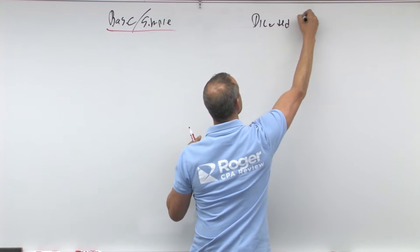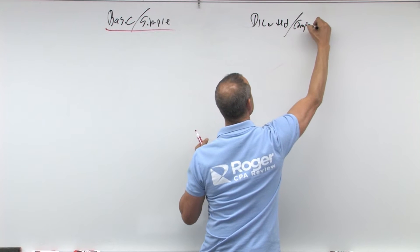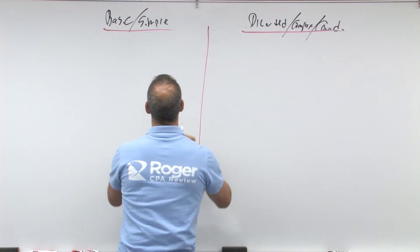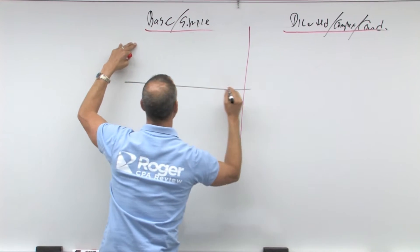Then we're going to go on to our diluted earnings per share, which is your complex system, which is anyone who could convert does so. So we're going to go through this and we're going to calculate it.